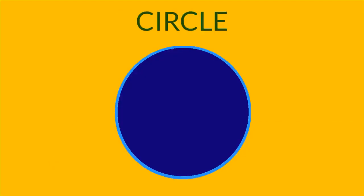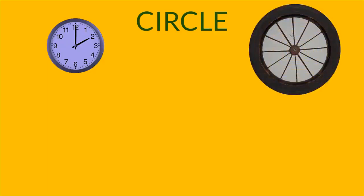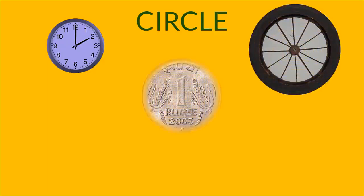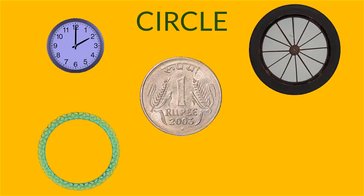Circle is a closed figure. It has no sides. It has no corners. Some examples of circle are clock, wheel, coin, bangle, tennicoit.